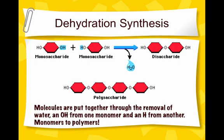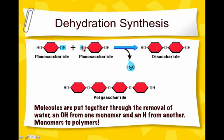On this slide we're looking at dehydration synthesis. Synthesis means to make, and dehydration means to remove water — so think of it as making something by removing water. Here you have two monosaccharides representing your monomers. You take a hydrogen from one monomer and a hydroxide (OH) from the other. When you remove both, they form H2O, and you get a disaccharide, which is the beginning of your polymer. For every bond formed, one water molecule is removed.